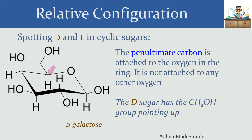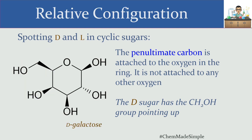These same rules apply to chair conformations as well. The penultimate carbon is the one attached to the ring oxygen but not to any other oxygens. The CH2OH group here is up and equatorial — the hydrogen is down and axial — so CH2OH is up in the ring, which identifies this as the D version of this carbohydrate. The same also applies in another orientation: the penultimate carbon has the CH2OH group coming towards us on a wedge, which is a quick way to identify the D version of the sugar.